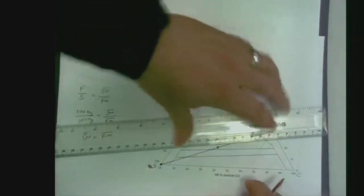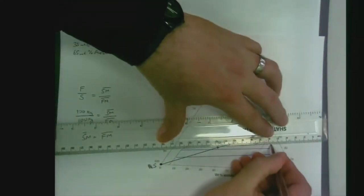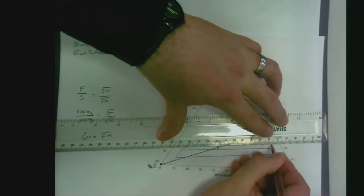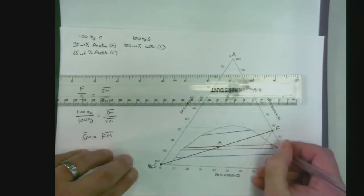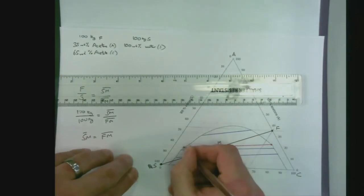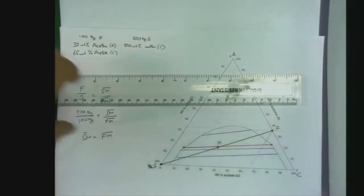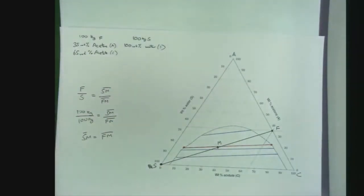We can put our straight line through our points. That gives us the composition of our two phases that are in equilibrium with each other. What we can then do, if we need to, is read off the compositions of those two points.